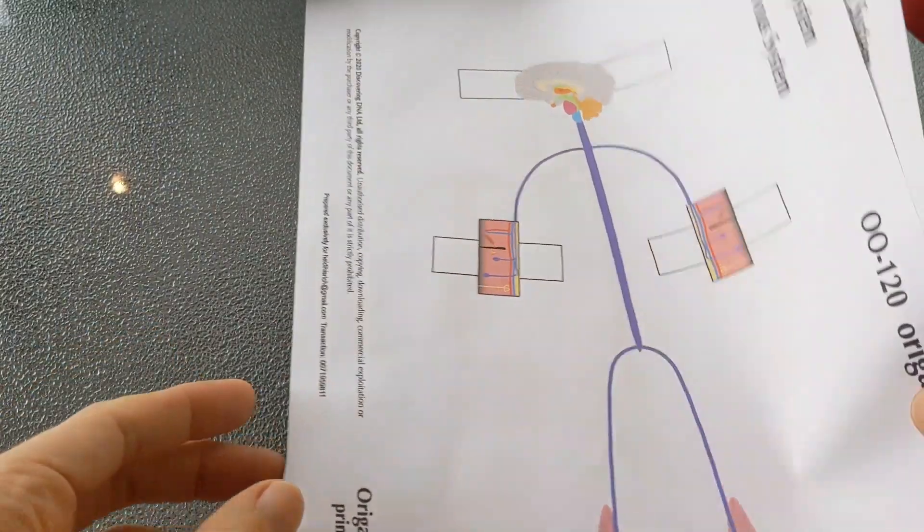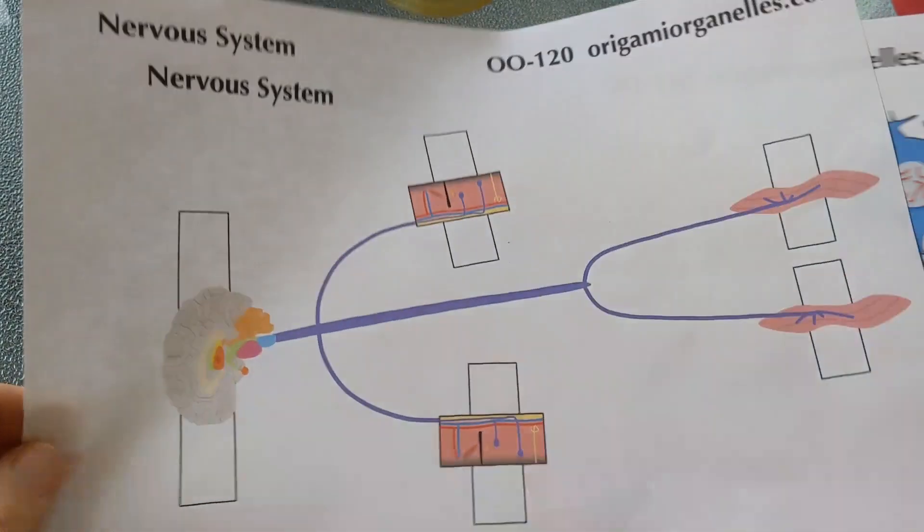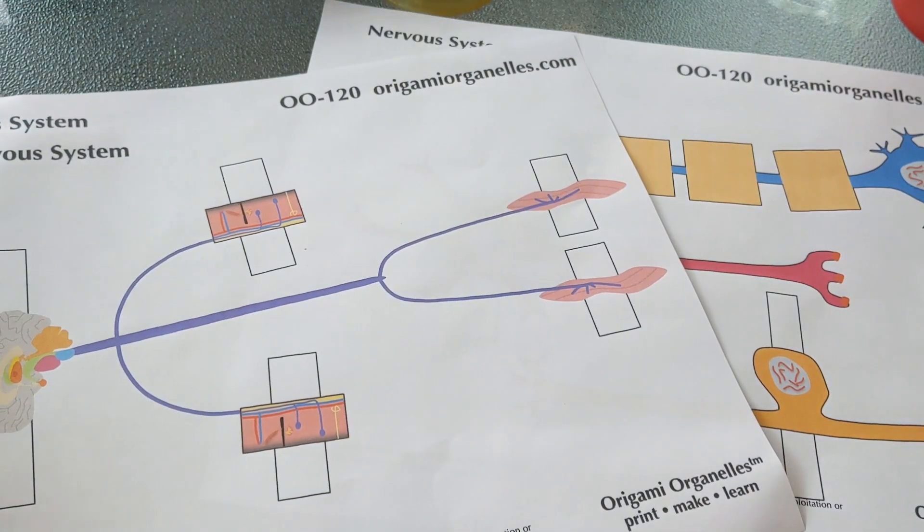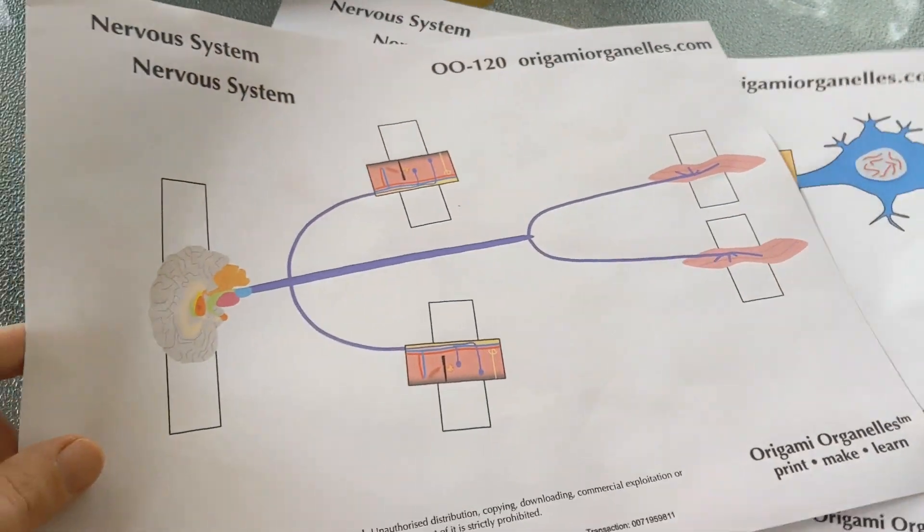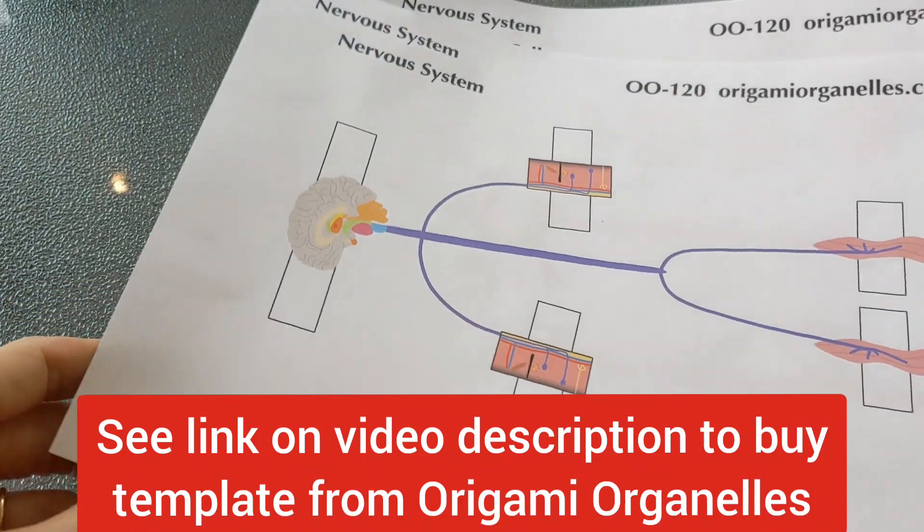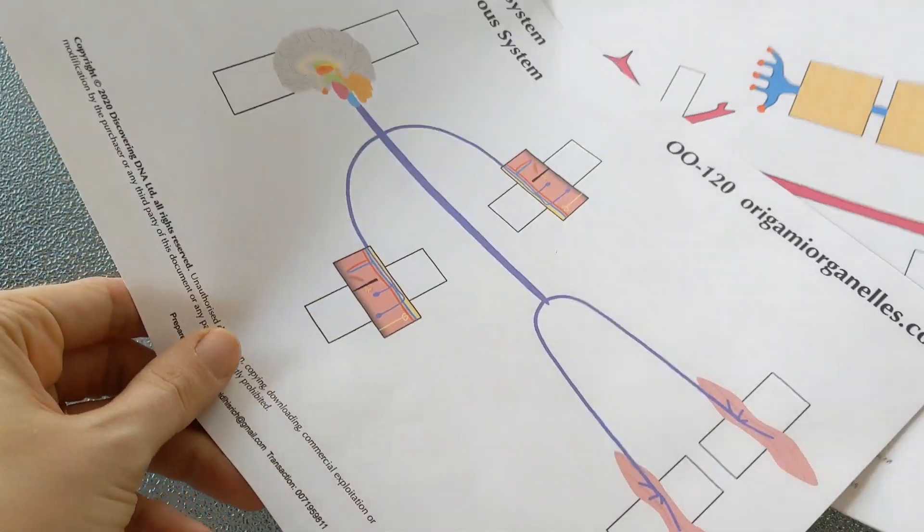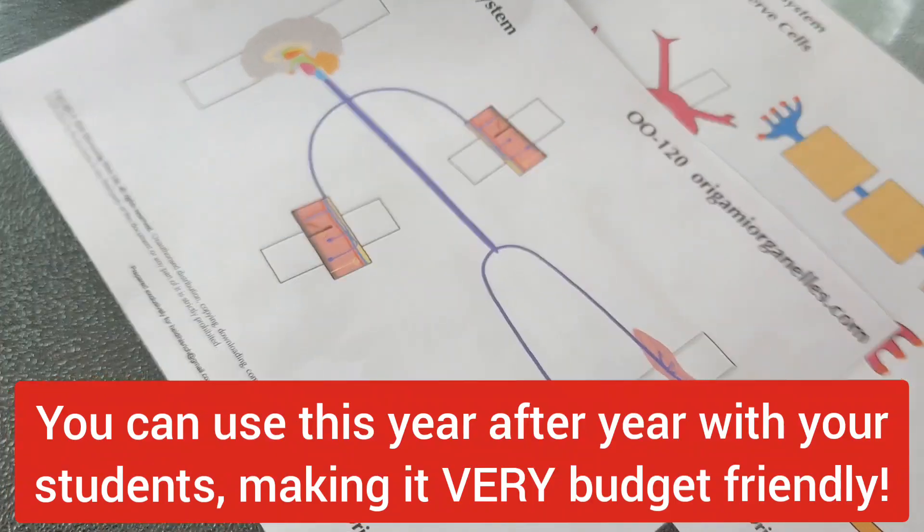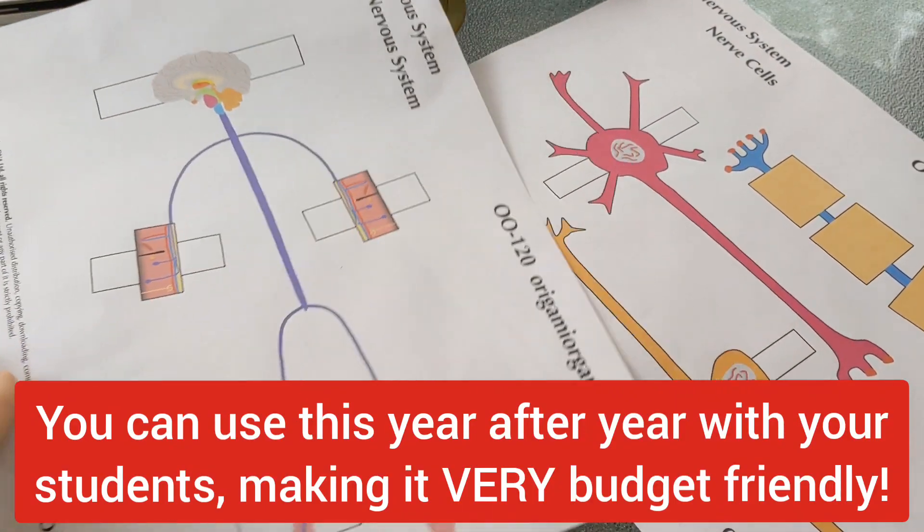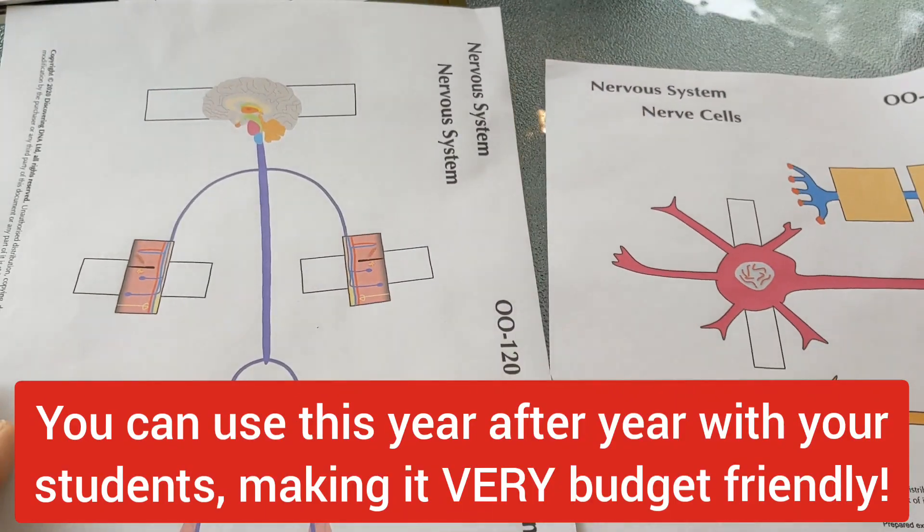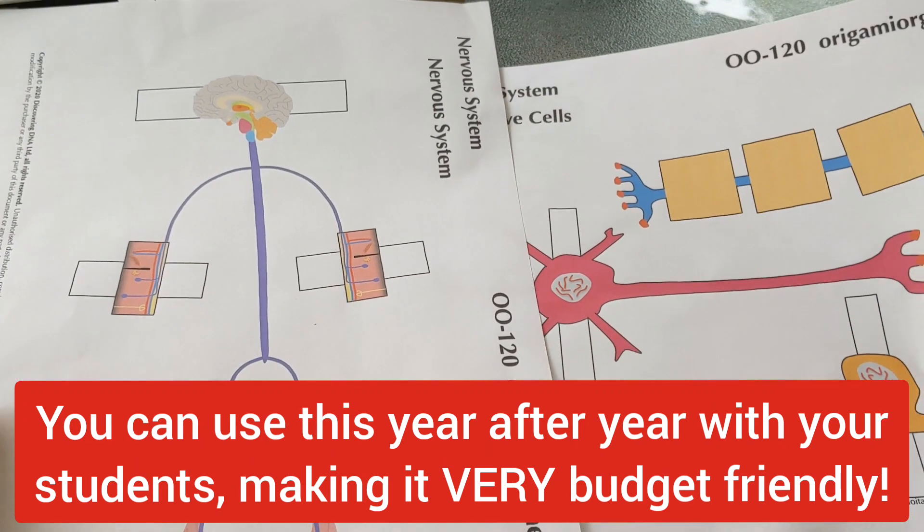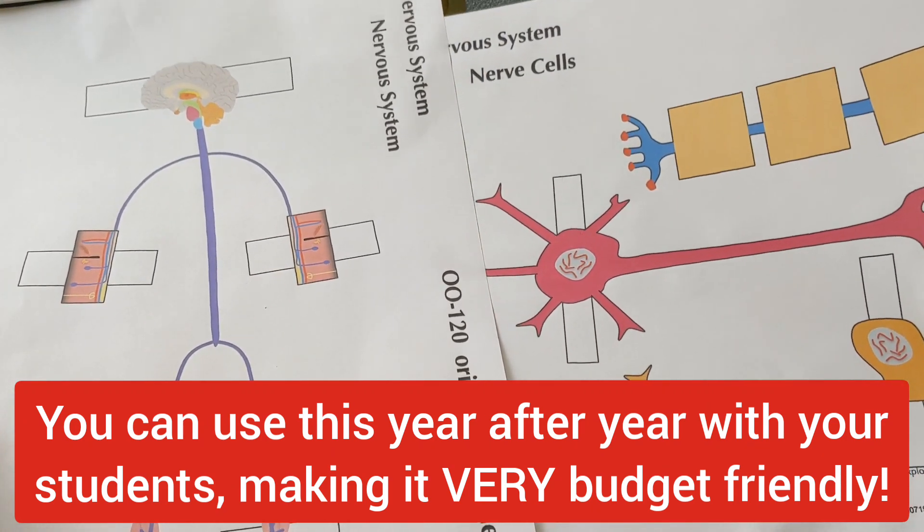If you decide you want to do this activity, it's available for purchase online from origamiorganelles.com. It's $5.99 to buy and it has instructions as well as templates to print out. I did the color printed versions but there's also a black and white template that you can print and color in.